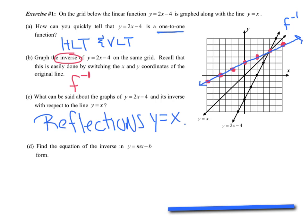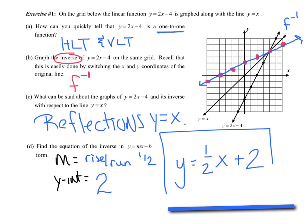Part D, find the equation of the inverse in y equals mx plus b form. You just need a slope and a y intercept. The y intercept is 2. The slope is your rise over run. As I go from red point to red point, I'm going to rise 1, run 2. So I have a slope of 1 half. I'm saying y equals 1 half x plus 2. This is the equation of the inverse.